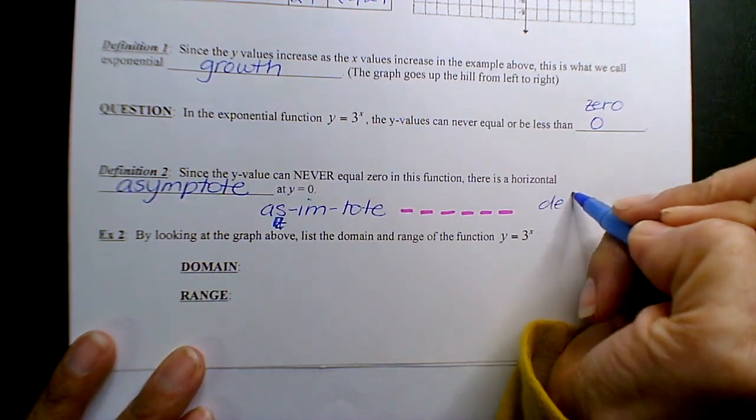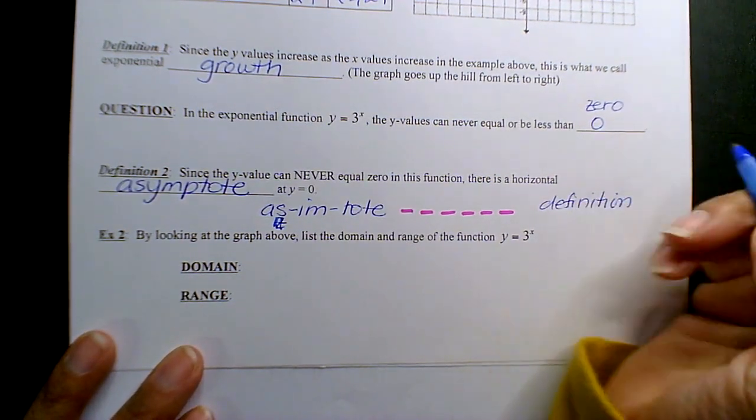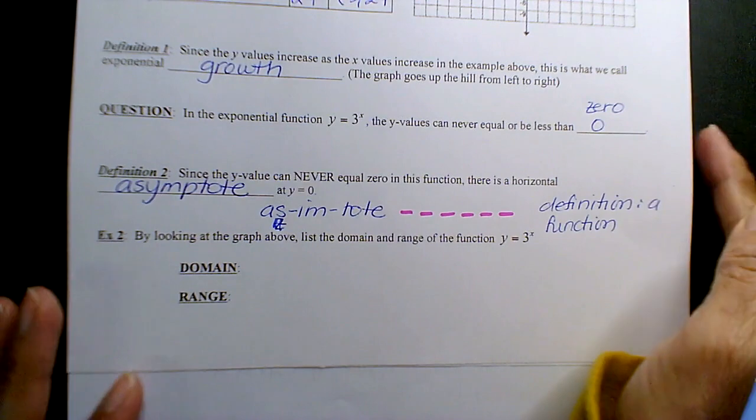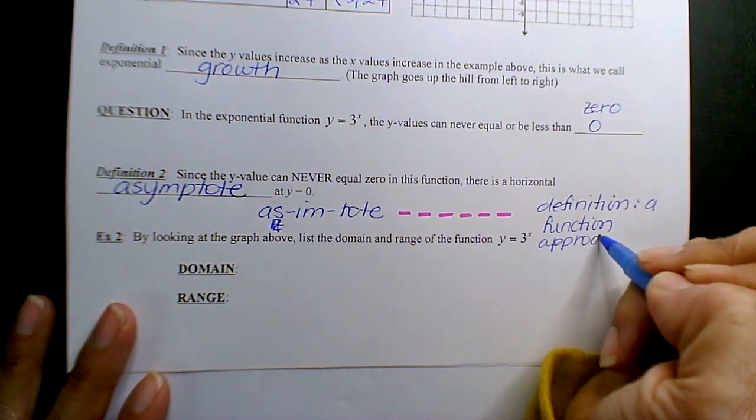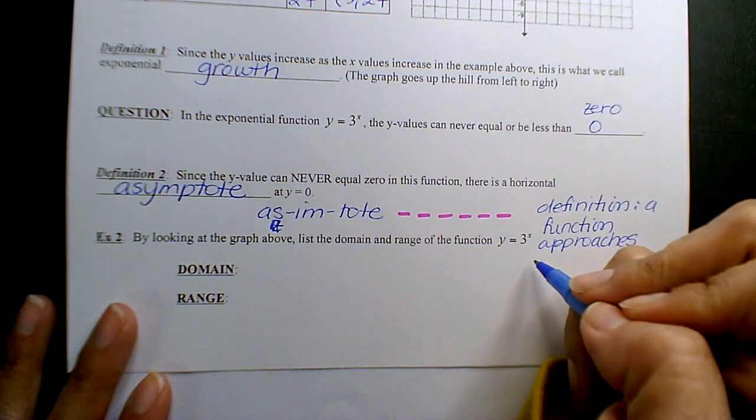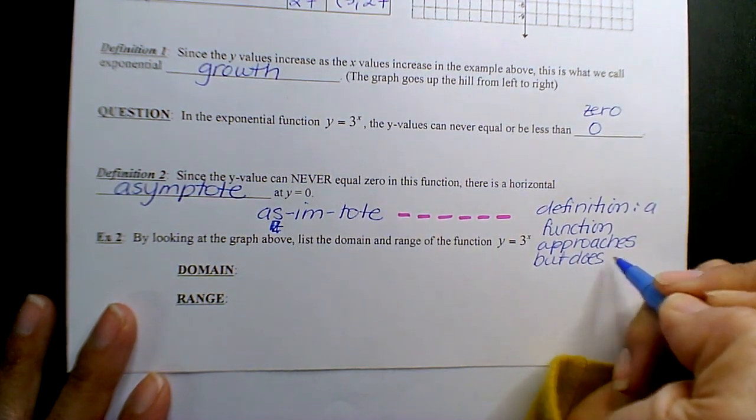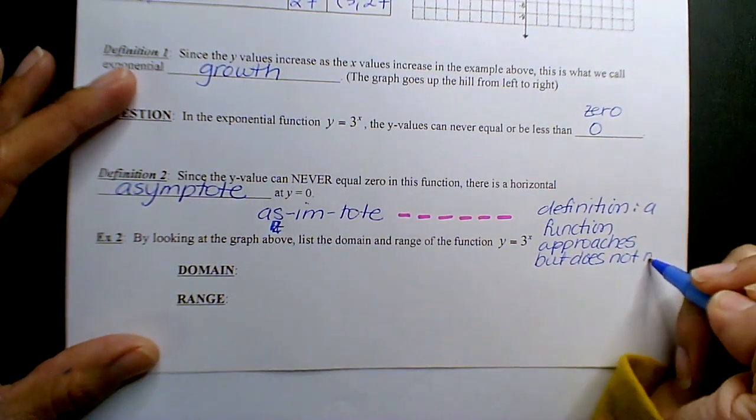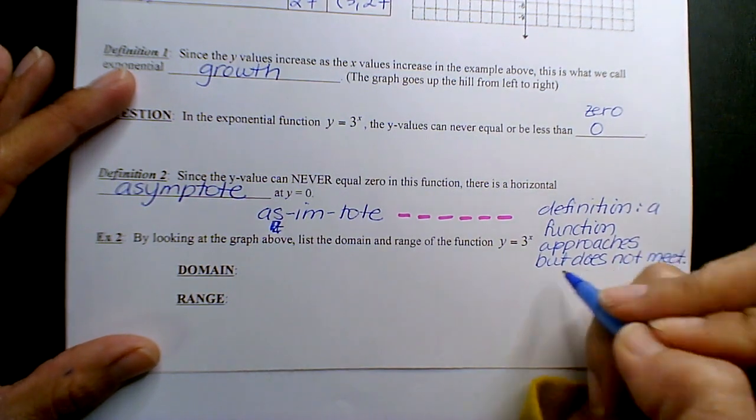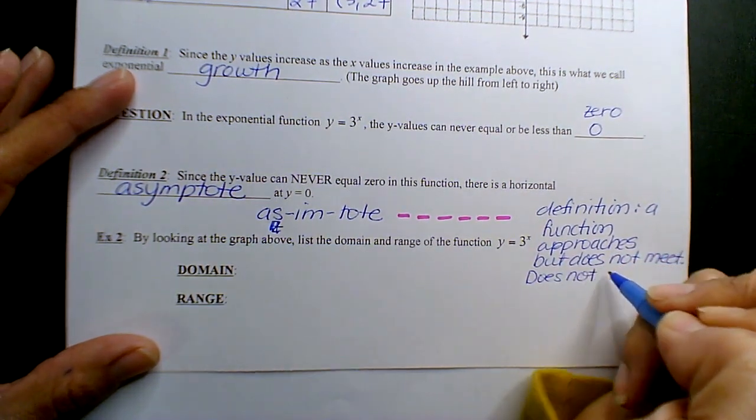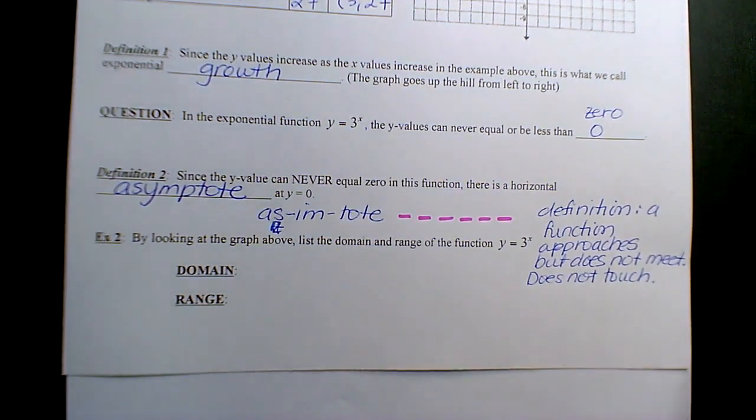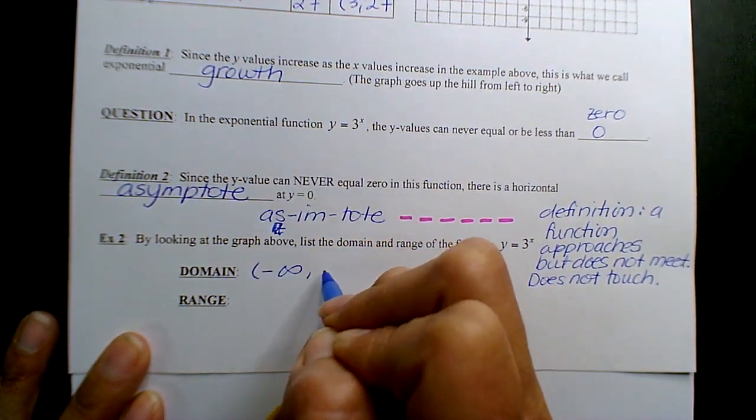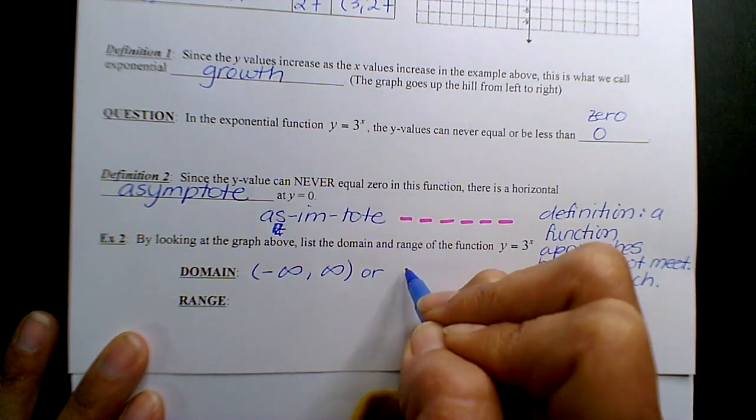Let me write this and then I'll read it. I know this is a really long video, but you guys are getting everything. This is the definition of an asymptote: it's a line a function approaches but does not meet, does not touch.